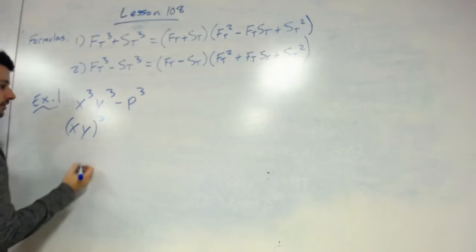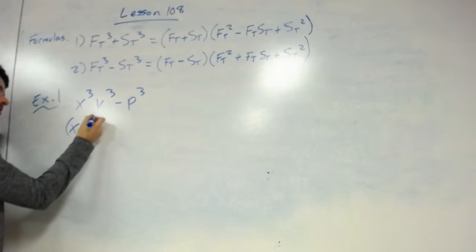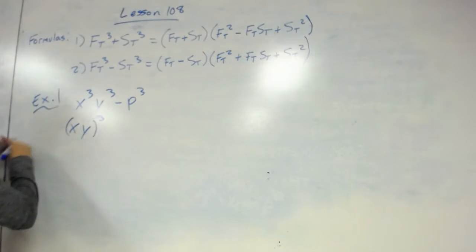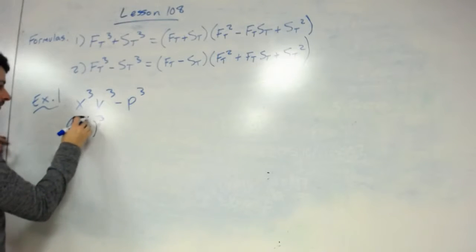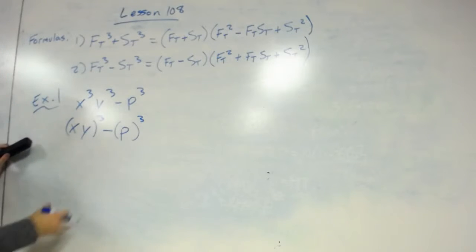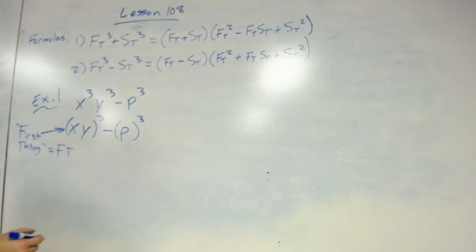So what happens when we factor out the cubed is I'm left with x times y cubed, because notice if I distributed it, it would be x cubed times y cubed. I'm going to write it over here just to show you how this whole formula works. When you break this down, what this represents here is what's called the first thing, a.k.a. Ft for here.